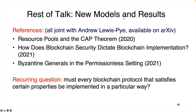We've finally reached the point in the talk where I'm going to move on from background, review, examples, and context to really new mathematical models and new mathematical results. As I said at the beginning, this is all joint work with Andy Lewis-Pye, a professor at the London School of Economics. We've written a sequence of three papers, all available on arXiv: 'Resource Pools and the CAP Theorem,' 'How Does Blockchain Security Dictate Blockchain Implementation,' and 'Byzantine Generals in the Permissionless Setting.' I'm going to cherry-pick one result from each of the three papers to tell you about, all illustrating the recurring theme: to what extent do the properties you'd like a blockchain protocol to have dictate what the protocol must look like — does it have to be proof of stake, does it have to be BFT-type, etc.?